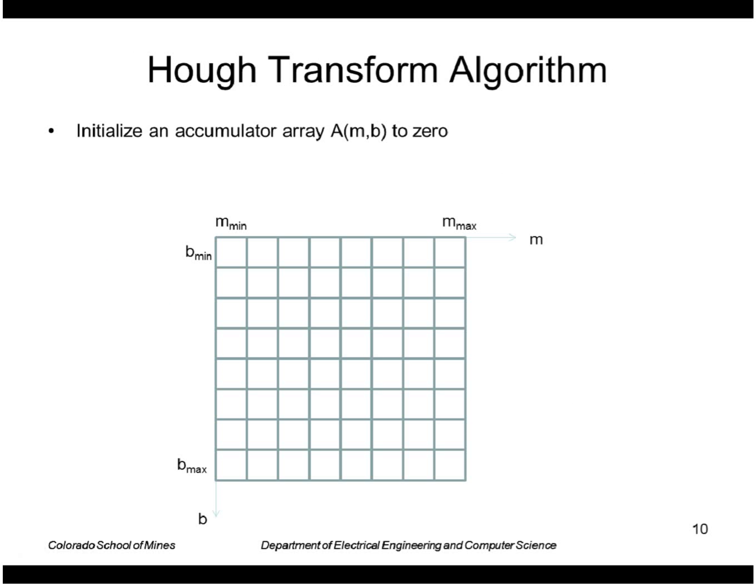Digitally, this is how we do it. We create a parameter array or accumulator array that represents discrete values such as values of m across the horizontal and values of b vertically. Set all those values to zero. Then go through the edge image and for each edge point increment all cells, all b and m that satisfy this equation.